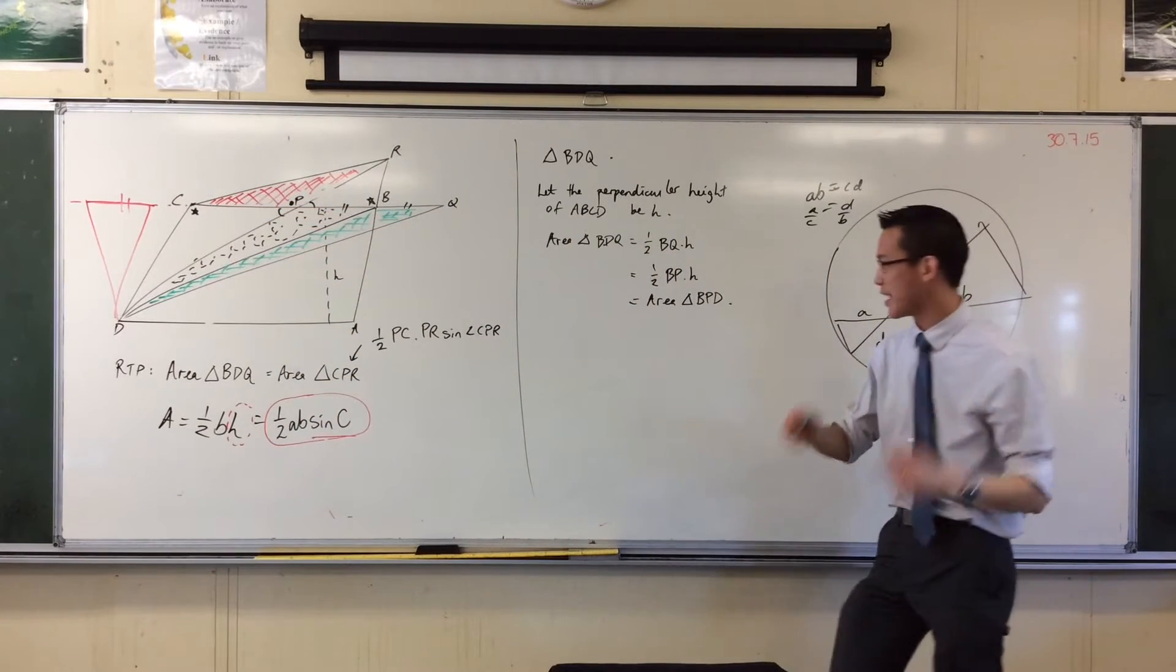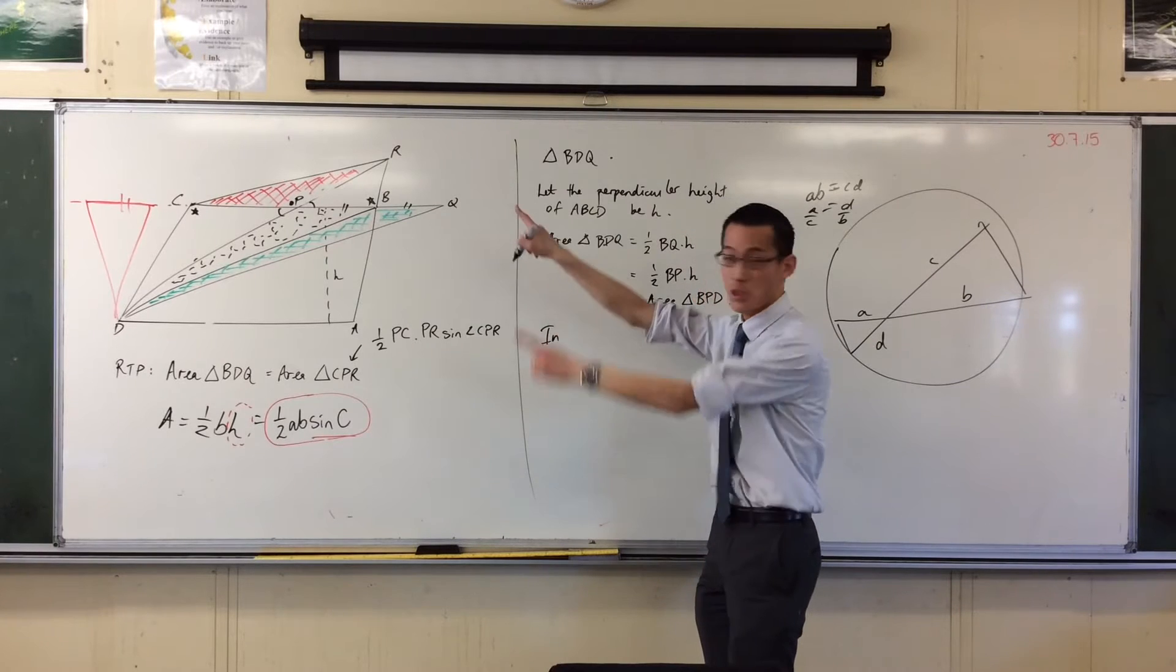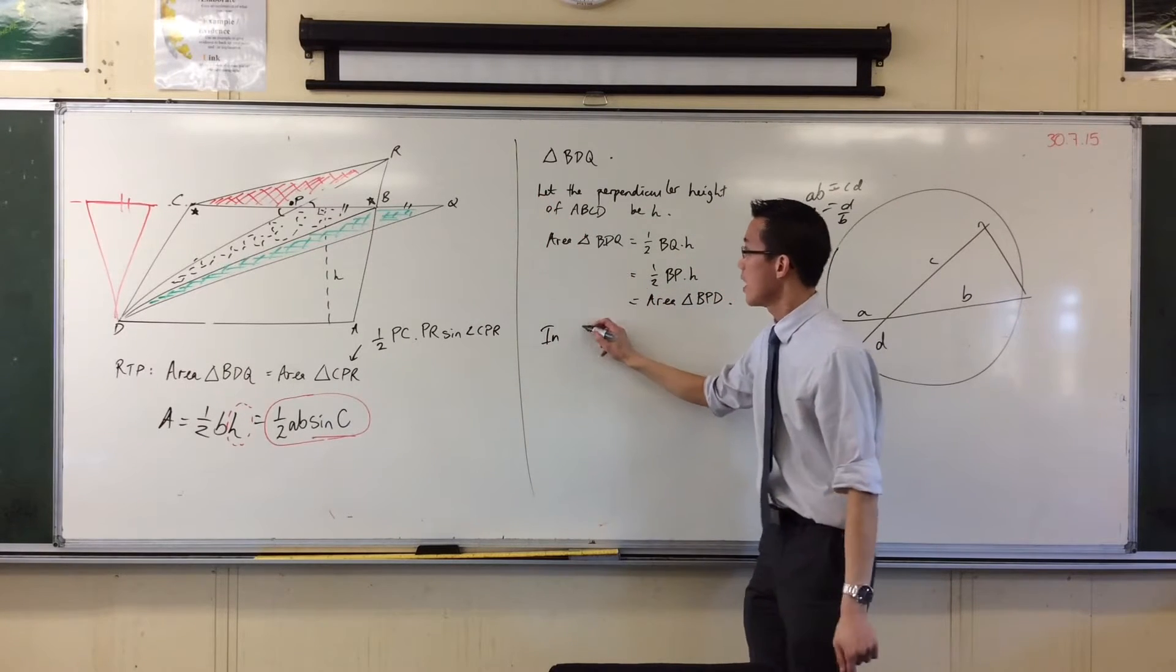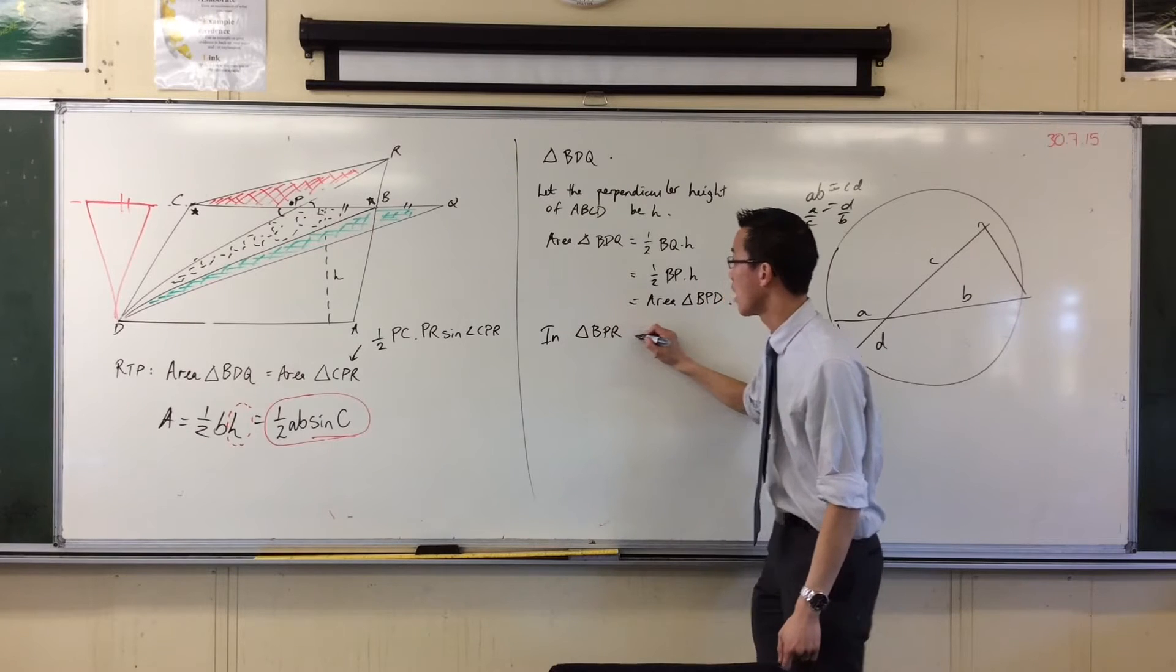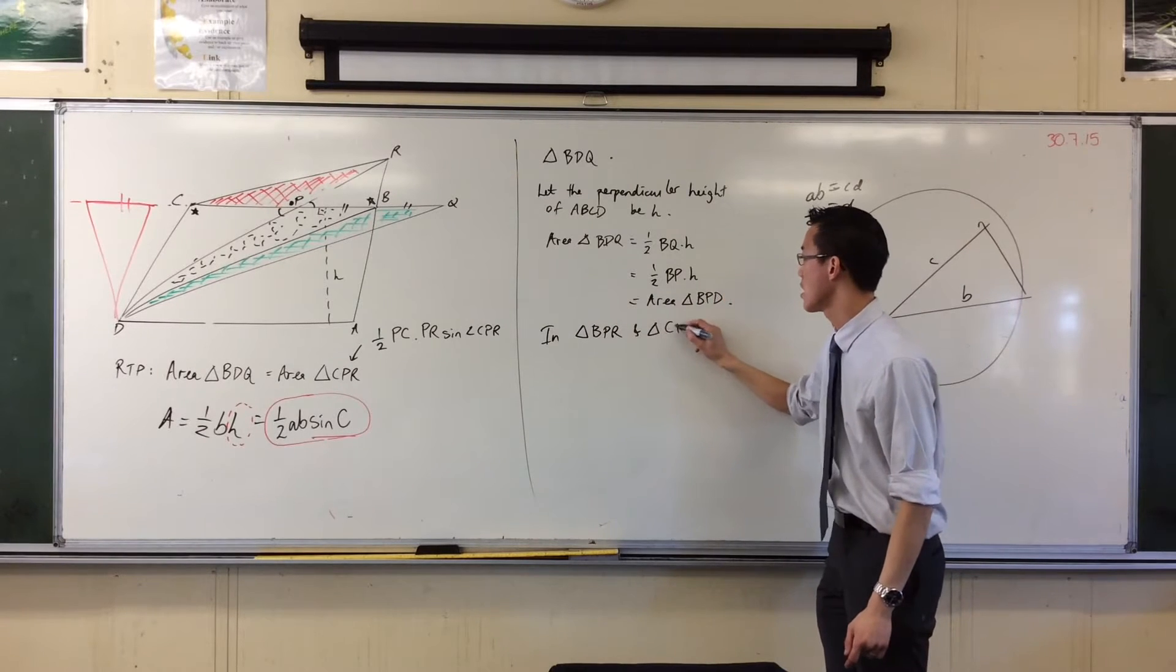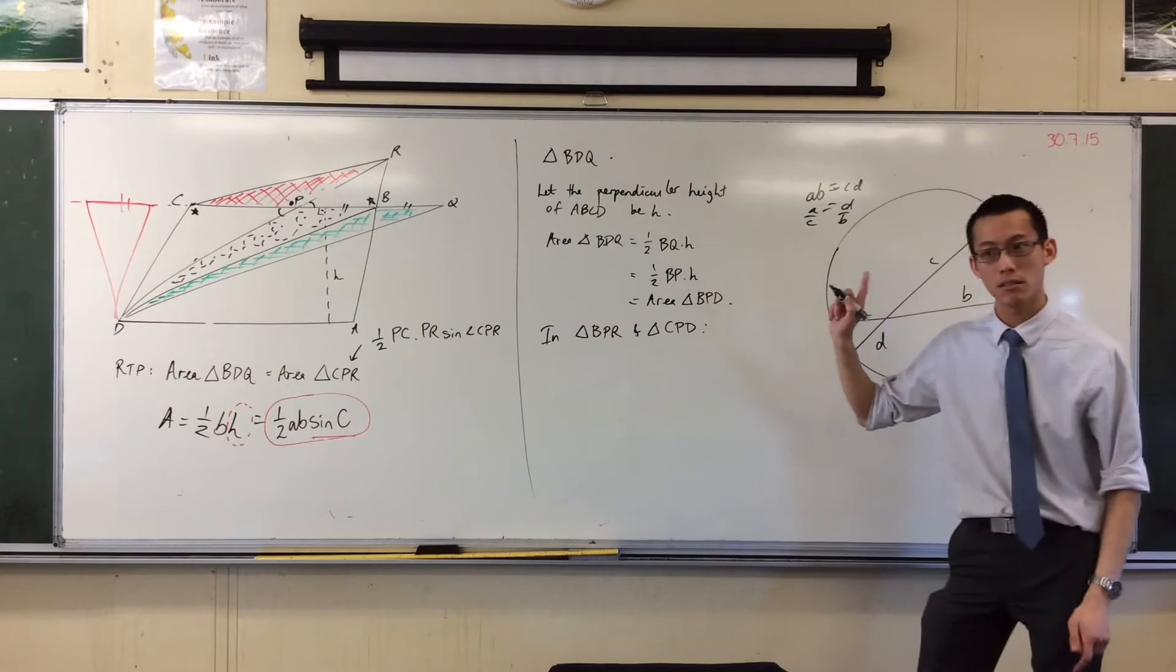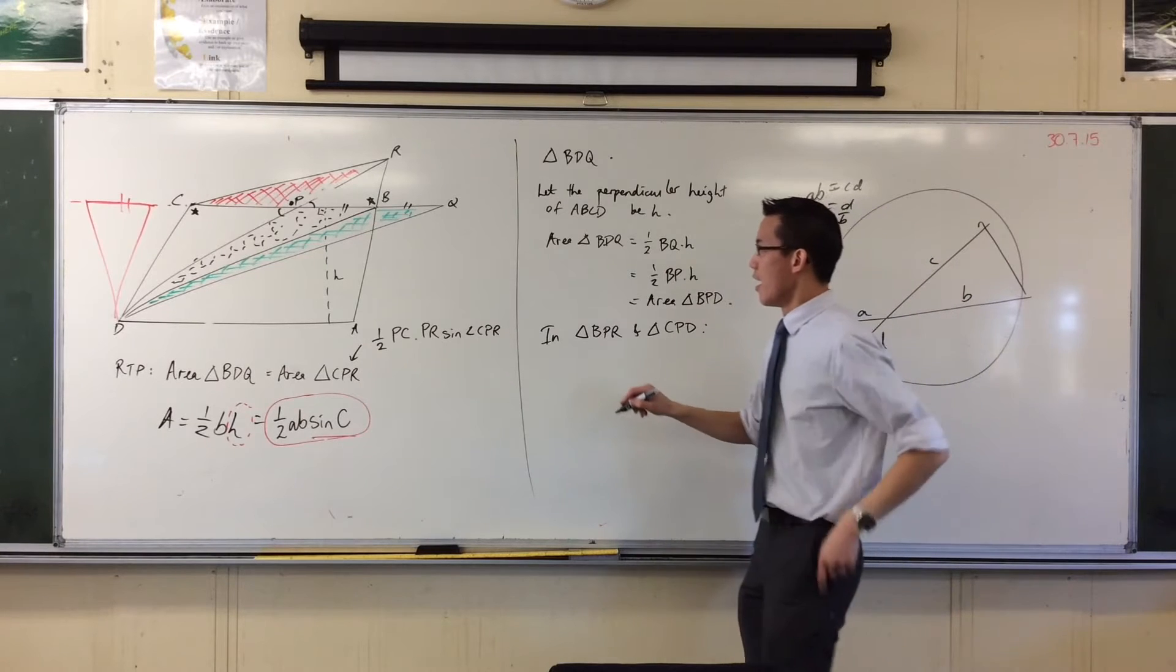So I know where I'm going now, so I'm gonna say in these two triangles, the uncolored ones, in triangle BPR and triangle CPD. Alright, which angles did I say?